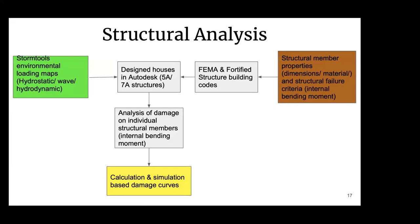Here's our flowchart which shows how the damage curves were determined. We have our structural member properties such as material and failure criteria. Incorporating this with the FEMA Fortified Structure Building Codes, 5A and 7A structures were created in our program Autodesk. The environmental loading maps — hydrostatic, wave, and hydrodynamic loads — were implemented on these structures, and from that the analysis of the damage on individual structure members was determined, allowing us to create our damage curves.